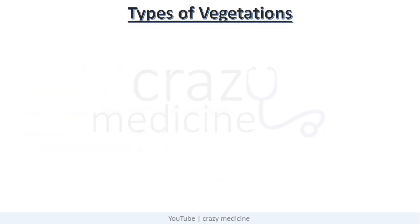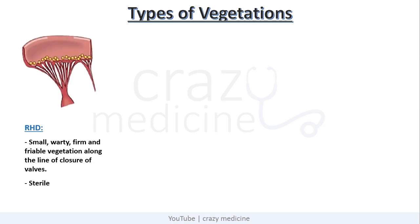Now we will compare different types of vegetations. First is rheumatic heart disease. As you can see in this image, vegetations are very small, firm and friable, present along the line of closure, and vegetations here are sterile.